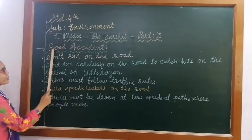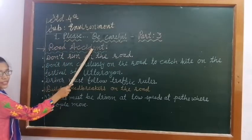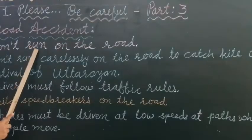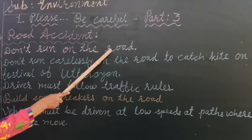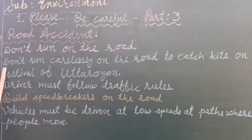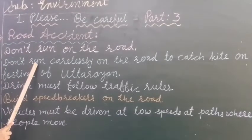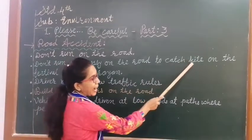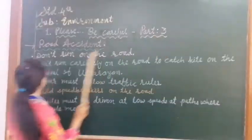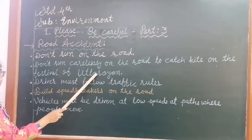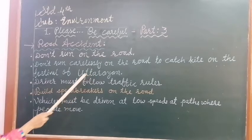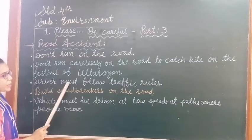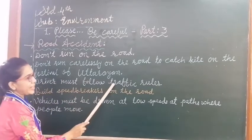Have a look at the board. Road accident. First point: Don't run on the road. Second point: Don't run carelessly on the road to catch a kite on the festival of Uttarayan. Third point: Drivers must follow traffic rules.